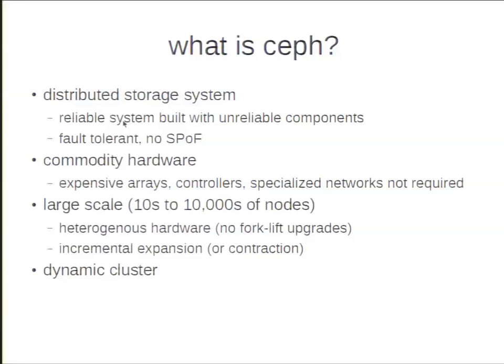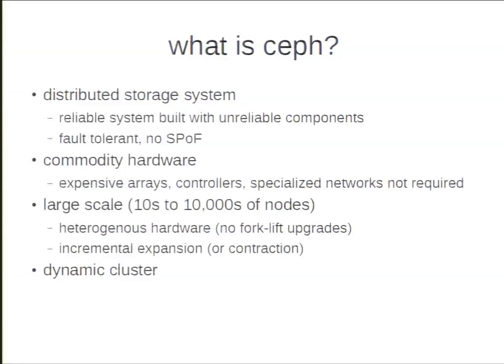You can use expensive arrays, controllers, and specialized networks, but those things aren't required. It's designed for very large scales — anywhere from tens of servers to tens of thousands of nodes. At those large scales, systems need to be heterogeneous. Usually you buy your first petabyte of one type of hardware, then six months later you buy another two or three petabytes. So these clusters are inherently dynamic — growing over time with mixed hardware. From the ground up, we designed Ceph to support incremental expansion or contraction as you deprovision old hardware.